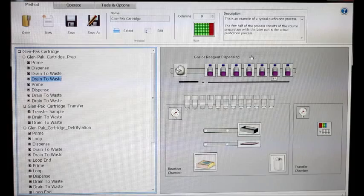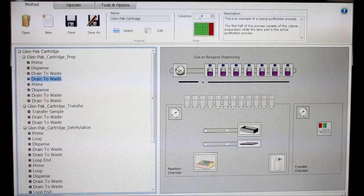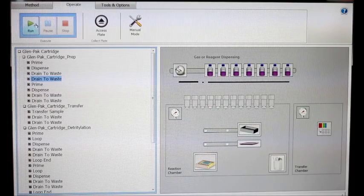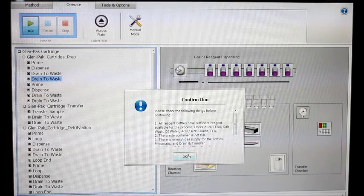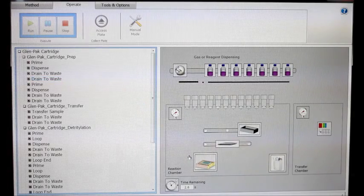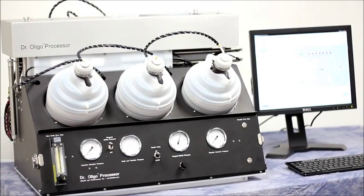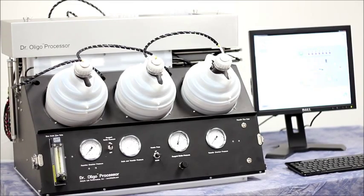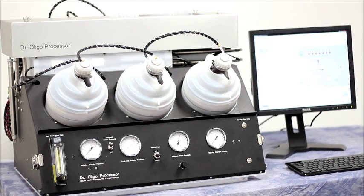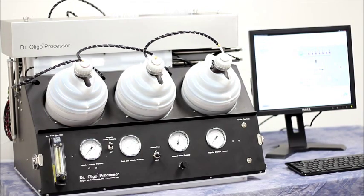Once you've selected the protocol and the number of columns you want to run, head to the operate tab and simply click run to begin your process. What you're hearing now is the valves turning on on the left-hand side of the reaction chamber, first purging with clean nitrogen gas and then dispensing the first reagent of your process to prime the lines.